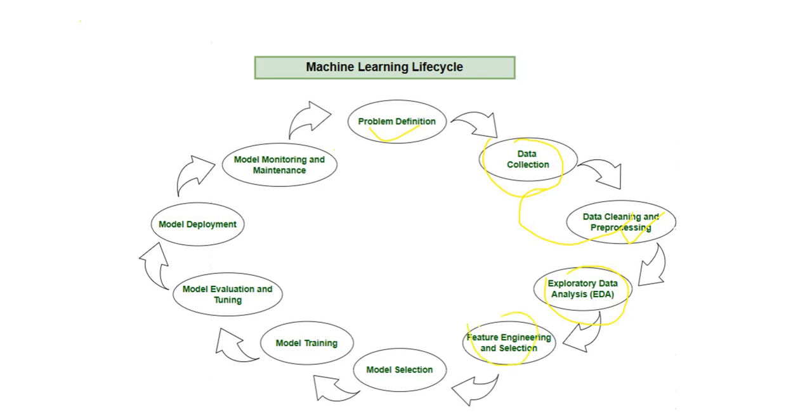Step number five: feature engineering and selection. Features are the input variables that affect predictions. We do two things here. First is feature engineering—we create new useful features. Example: from date extract month and day-wise session. Then feature selection—we choose only the most important features to reduce complexity and improve accuracy.